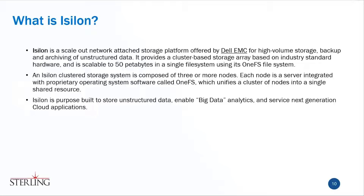What is Isilon? It's a scale-out network attached storage platform offered by Dell EMC for high-volume storage, backup, and archiving of unstructured data. It's cluster-based and can scale to 50 petabytes in a single file system. An Isilon system is composed of three or more nodes — each node is a server integrated with a proprietary operating system called 1FS, which unifies the cluster of nodes into a single shared resource. It's purpose-built to store unstructured data, enable big data analytics, and service next-generation cloud applications.